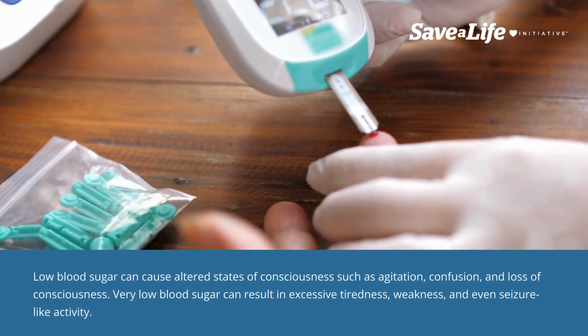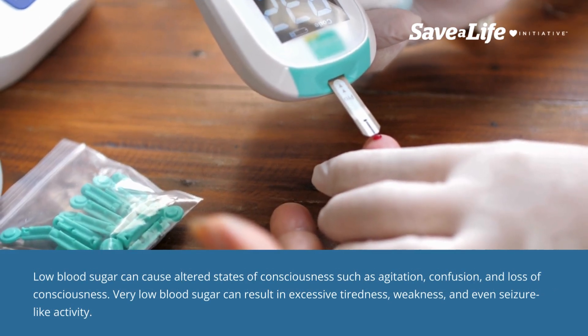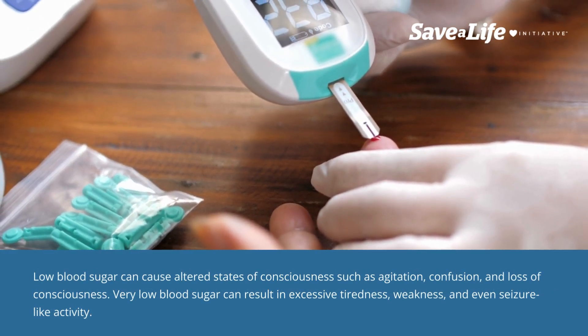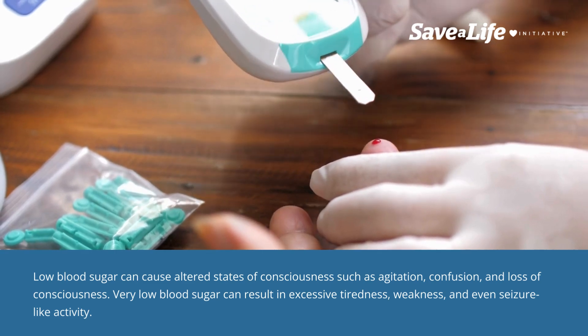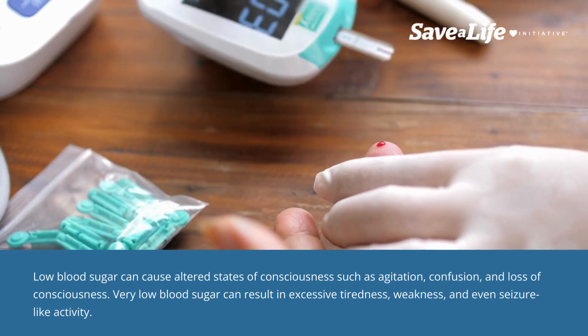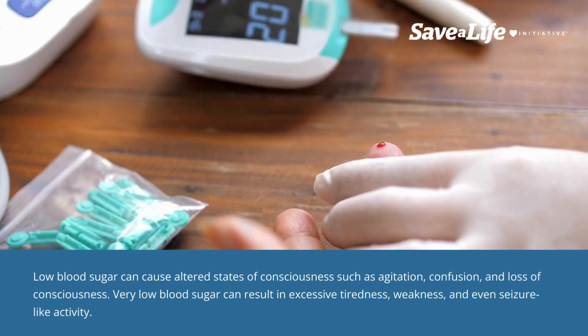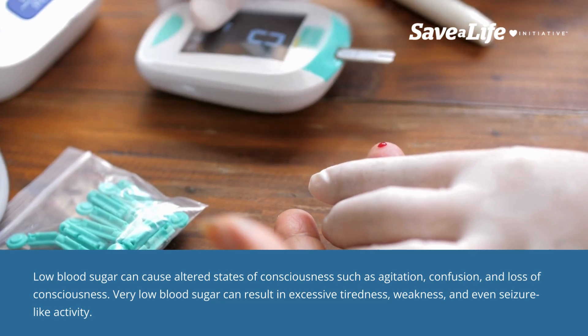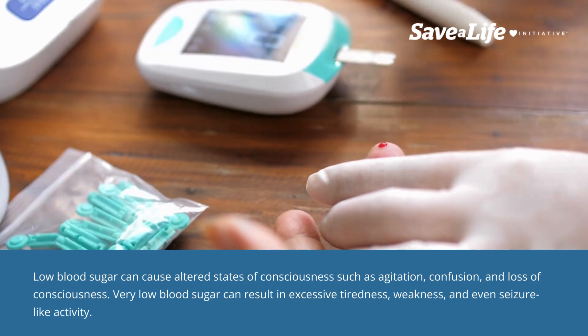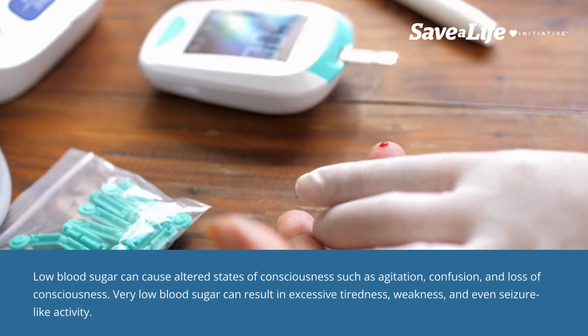Low blood sugar can cause altered states of consciousness such as agitation, confusion, and loss of consciousness. Very low blood sugar can result in excessive tiredness, weakness, and even seizure-like activity.